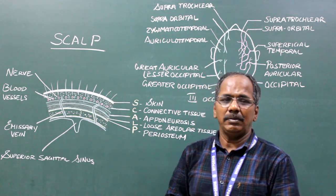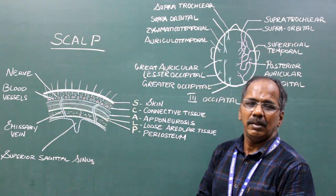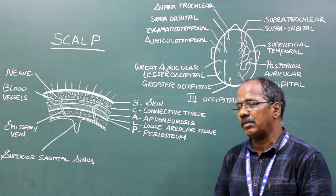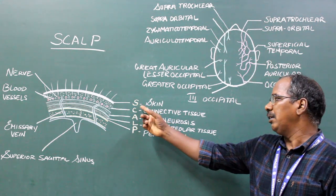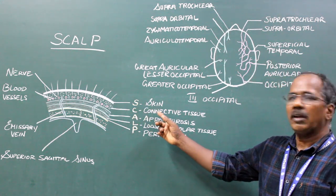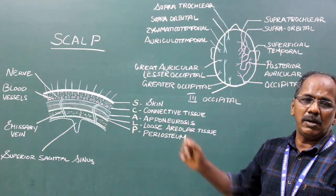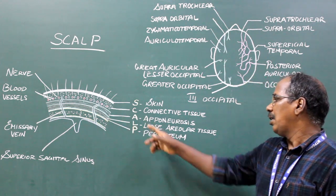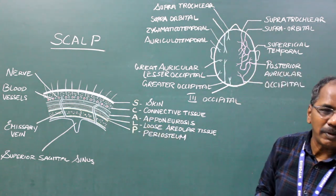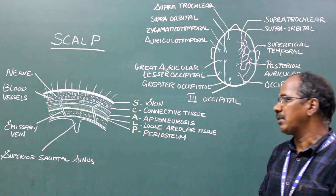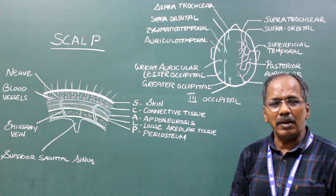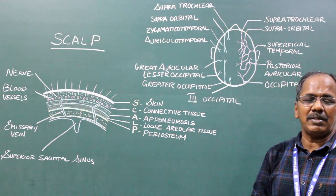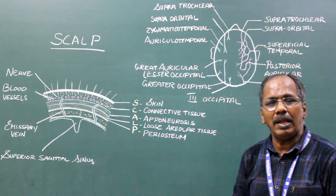Layers of the scalp. The scalp is made of five layers. They are: skin, connective tissue or superficial fascia, aponeurosis of occipitofrontalis, loose areolar tissue, and periosteum or pericranium.